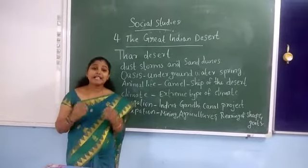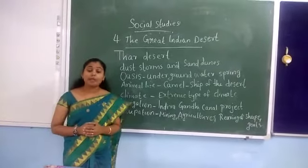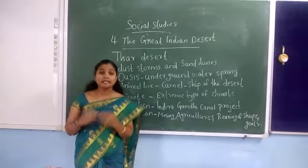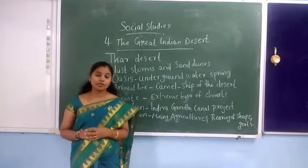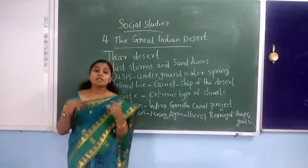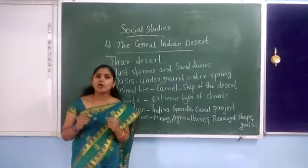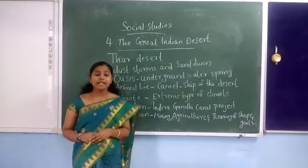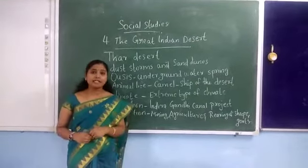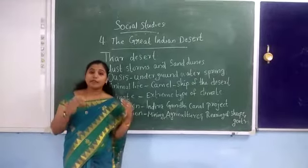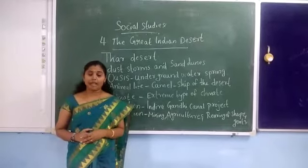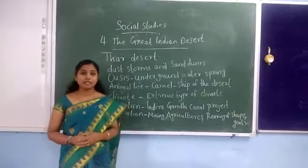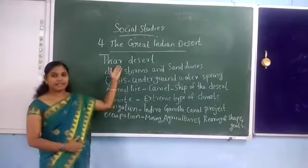A desert is a sandy area with not much vegetation. Mainly this desert was formed because of soil erosion and hot waves. Here we can see that this Great Indian Desert occupies western Rajasthan, and this region is also known as the Thar Desert.